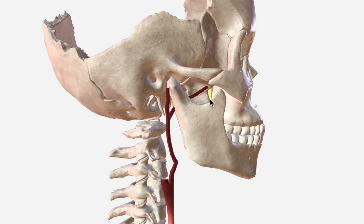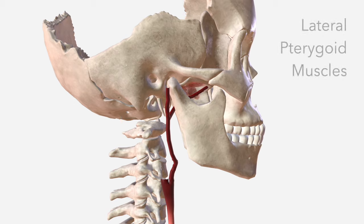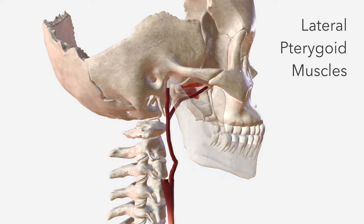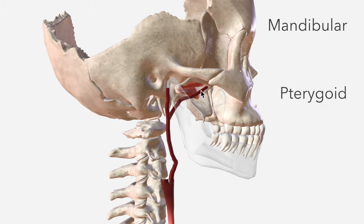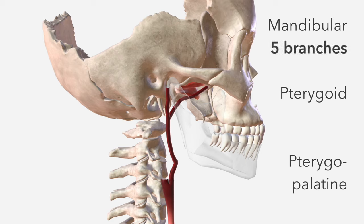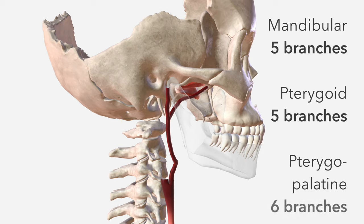The maxillary artery tends to be divided into three parts, based on each part's relationship to the lateral pterygoid muscles. Making the mandible transparent helps appreciate this more clearly. We divide it into the mandibular part, the pterygoid part, and the pterygopalatine part, which enters the pterygopalatine fossa. There are said to be five branches from the first part, five from the second, and six from the third.